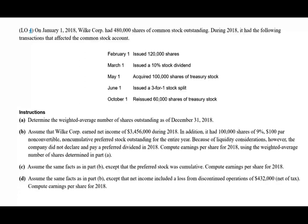So let's go ahead and take a look at this exercise. On January 1, 2018, Wilk Corporation had 480,000 shares outstanding — this is at the beginning of the year. During 2018, it had the following transactions that affect common stock. February 1st, they issued 120,000 shares. March 1st, they issued a stock dividend of 10%. May 1st, they acquired 100,000 shares.